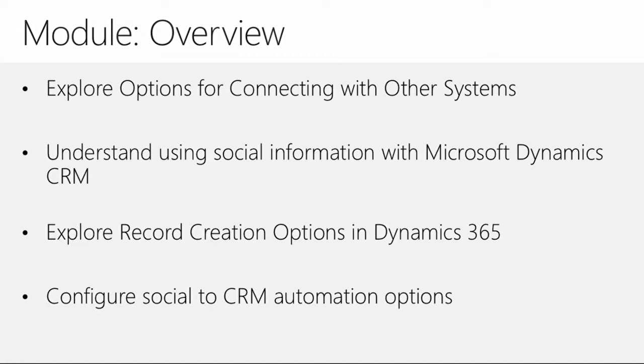We also want to look at record creation options in the context of Dynamics 365 and Social Engagement, and expand on that to show how you can grab data from Twitter or other sources and bring it into the mix. This correlates to what we discussed in Module 3 about using Flow to create records and surface information inside Dynamics 365, which creates the activities needed for automatic record creation and update rules.